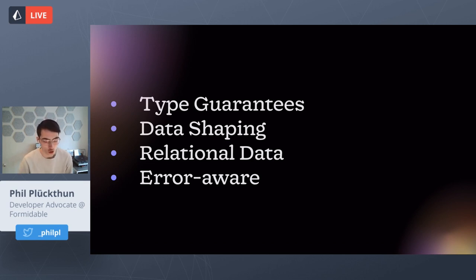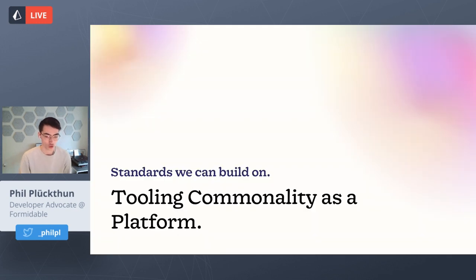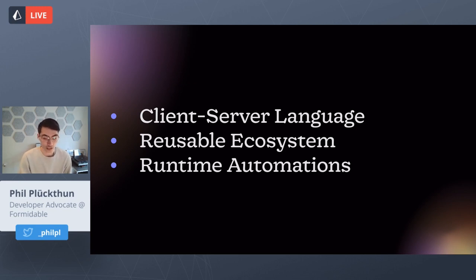Type guarantees and documentation aren't entirely new — many teams add Swagger for REST APIs. Data shaping isn't new either; many RESTful frameworks allow including or excluding data. GraphQL's error-aware error handling is something many teams would come up with their own conventions for anyway. But these are all things we can agree on, and that tooling commonality becomes a platform that everyone can rely on and build upon.